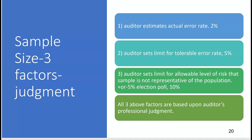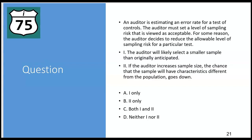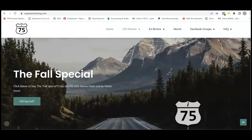Are there any other factors in determining sample size for a test of controls? Nope — just those three. Practice question: An auditor is estimating an error rate for a test of controls. The auditor must set a level of sampling risk that is viewed as acceptable. Do this question for homework and leave the answer in the comment section. Don't forget to like and subscribe — it helps the channel. If you found this video easy to follow, get yourself on I-75 with Darius Clark, where the right teacher makes all the difference.